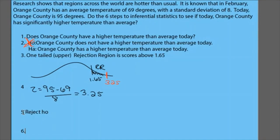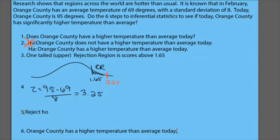Now, when I tell grandma — call her up — notice my alternative says Orange County has a higher temperature than average today. You might be thinking, oh wait, she said to get specific. That's actually already specific. When it's one-tailed it already got specific. So we can still just say: Orange County has a higher temperature than average today. And that's all we need for this question.